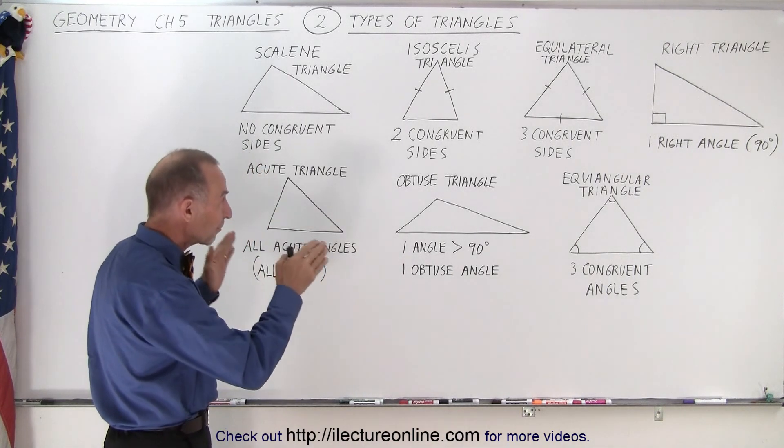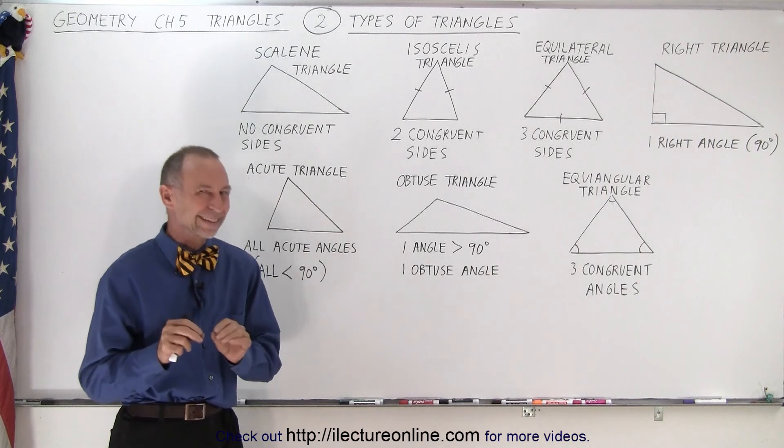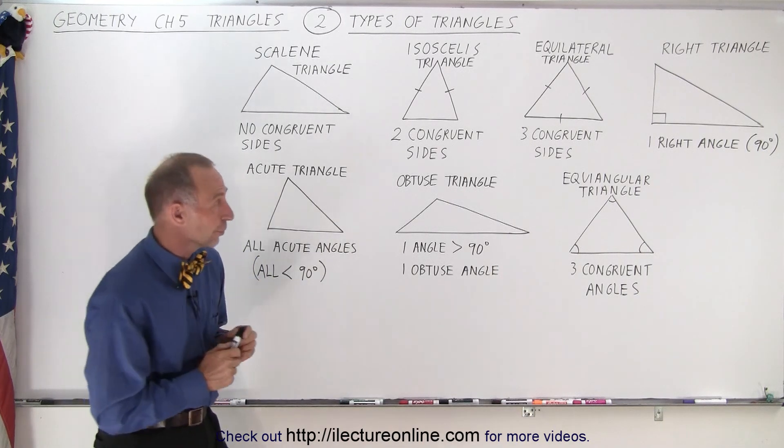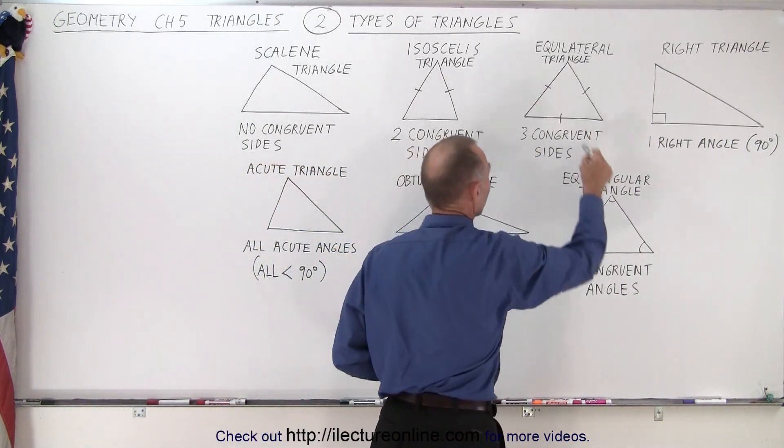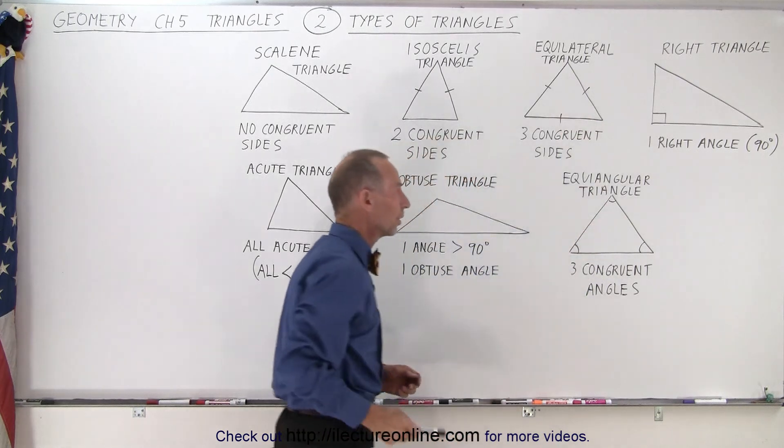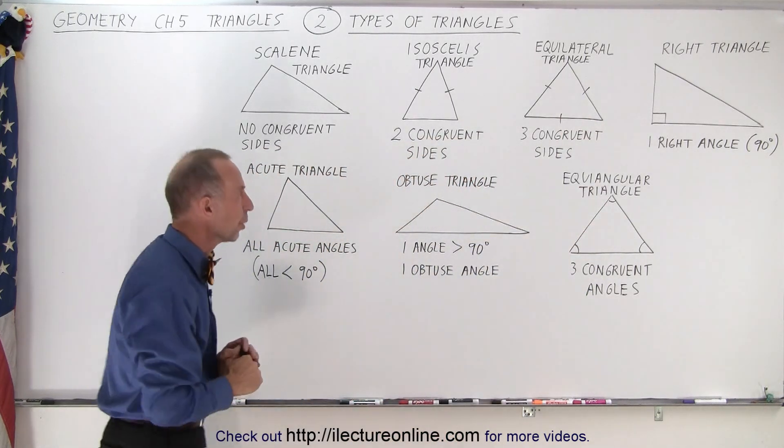Even though you see seven different triangles on the board, there's only six different triangles because it turns out that these two are actually equal to one another and we'll see that in just a moment.